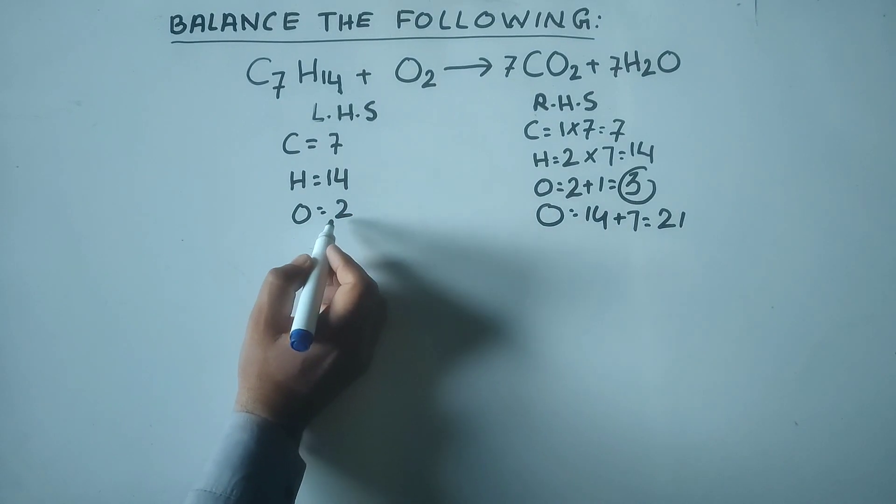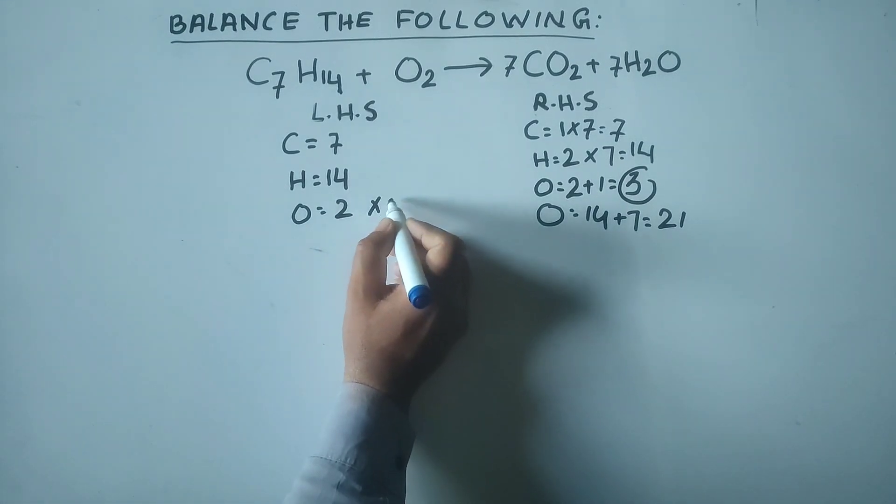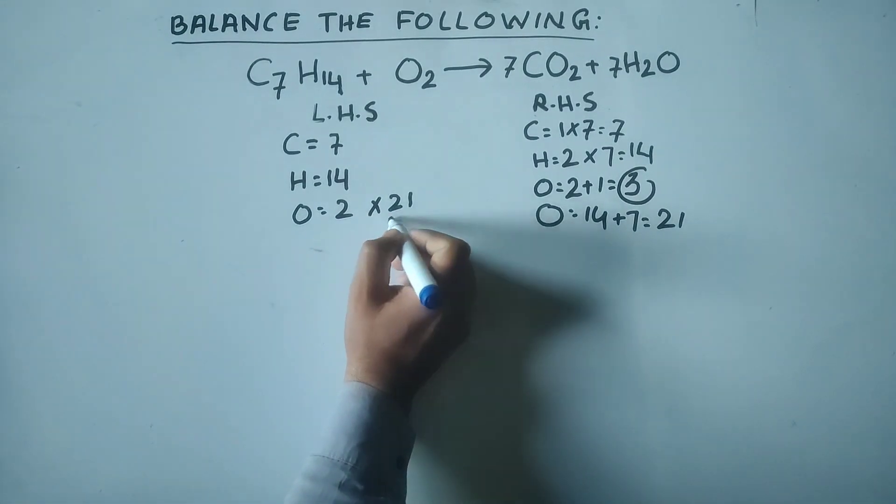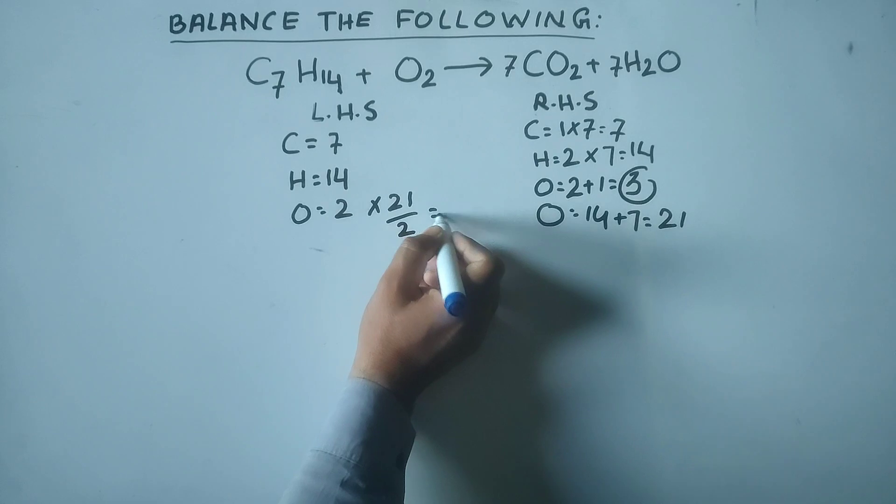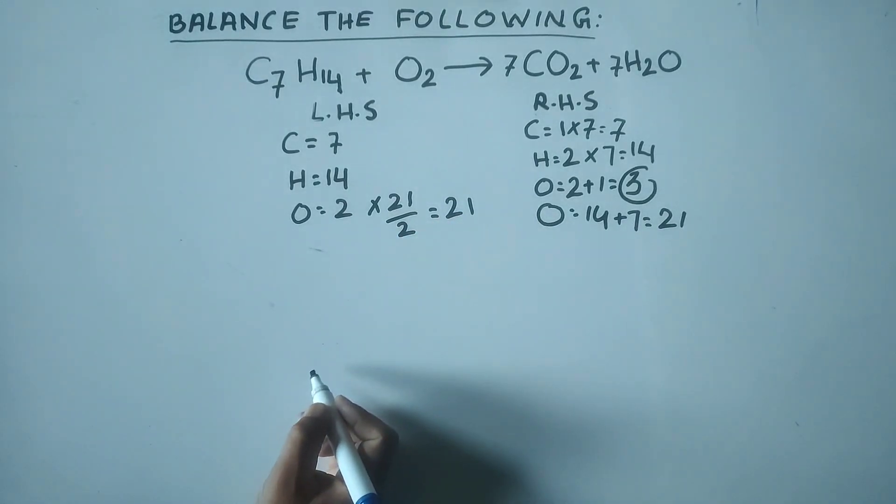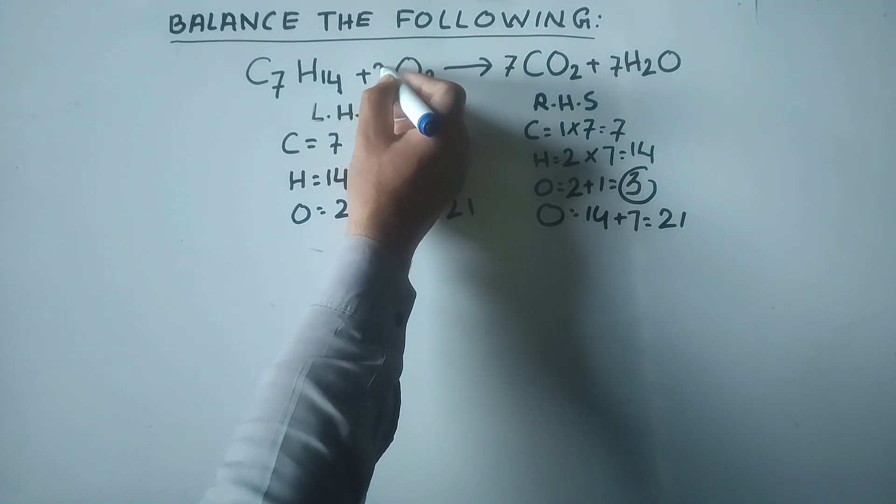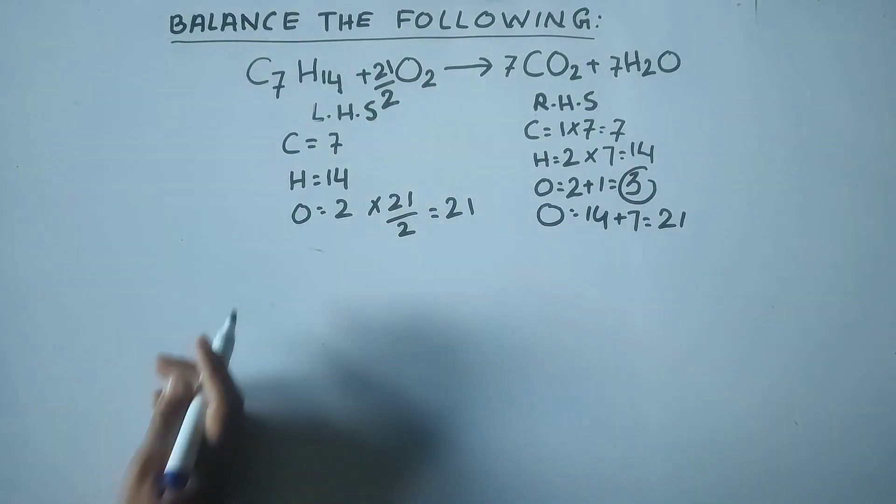On this side there are 2 oxygen atoms. If this 2 is multiplied by 21/2, this gives the answer 21. It means for oxygen O2 we add 21/2.